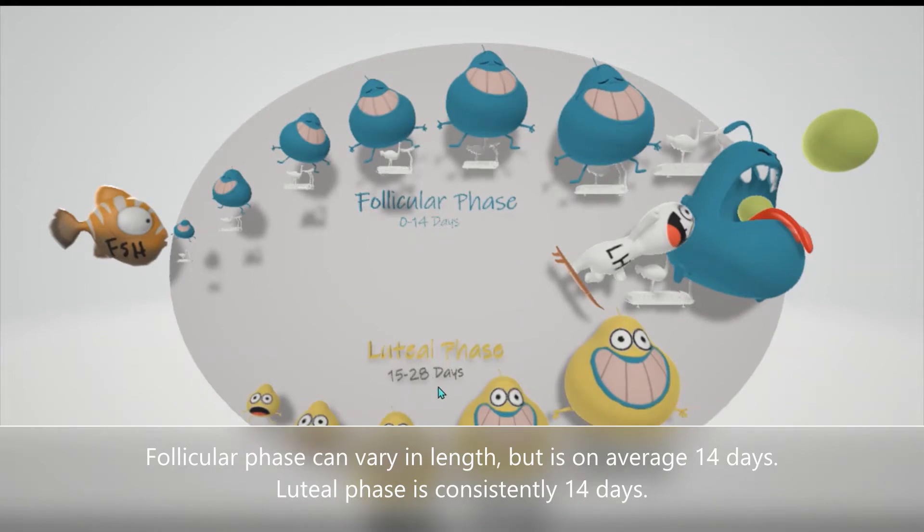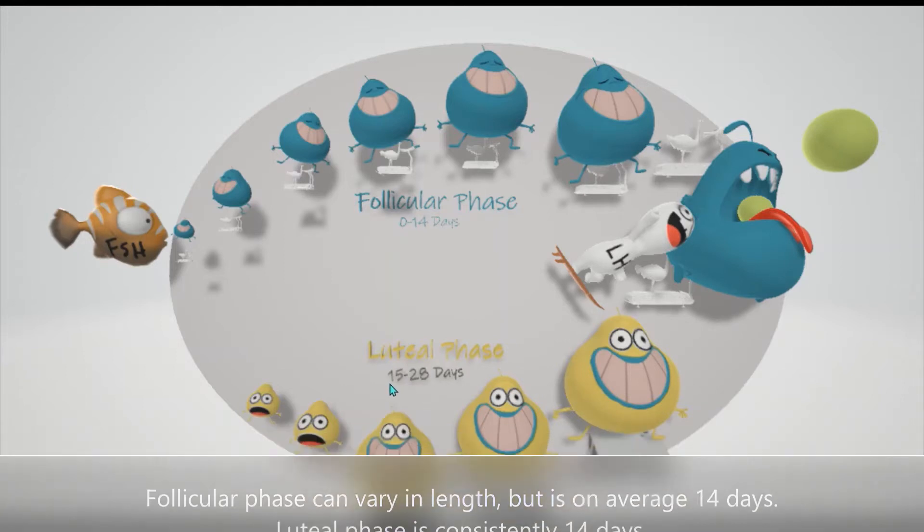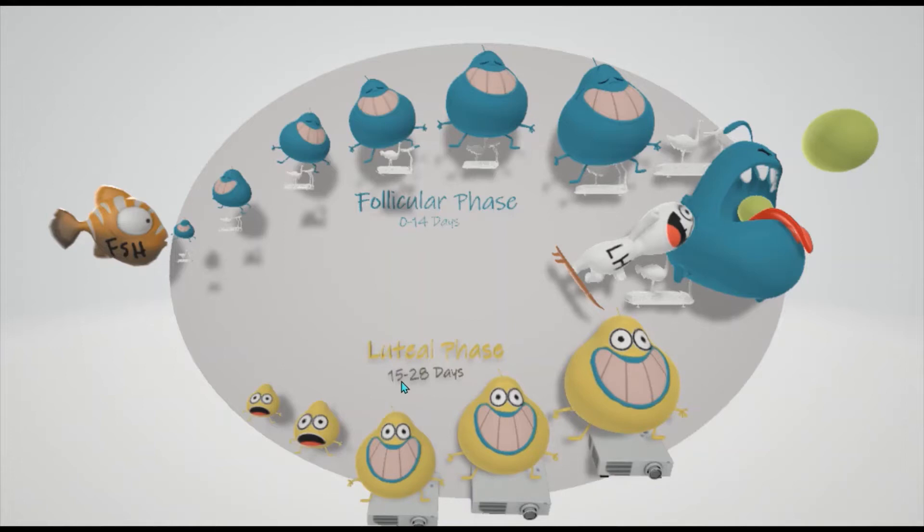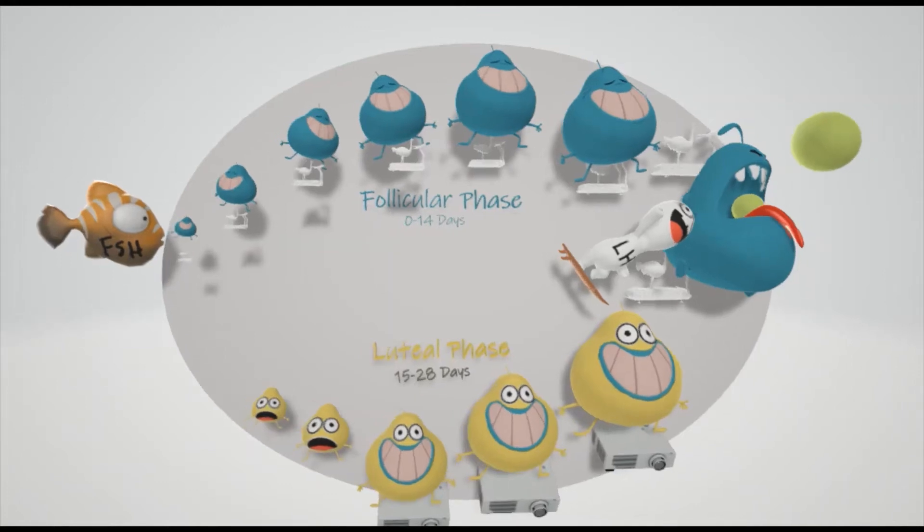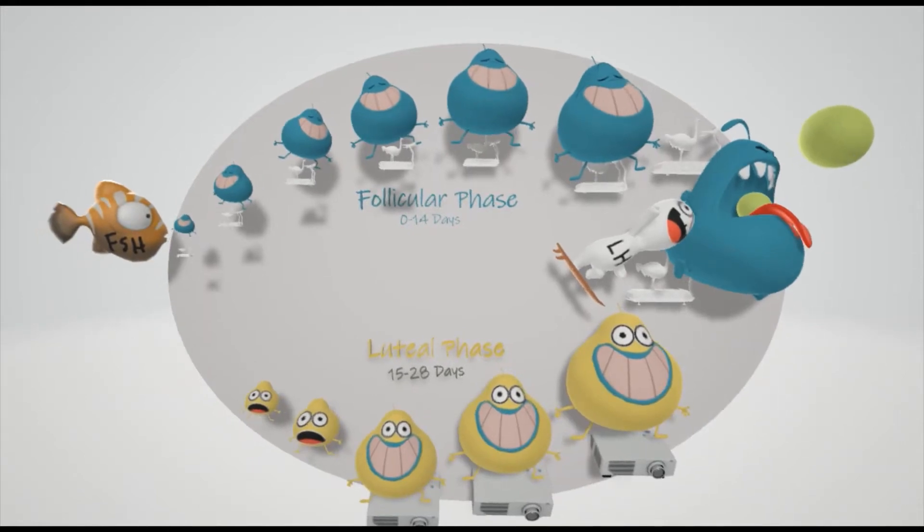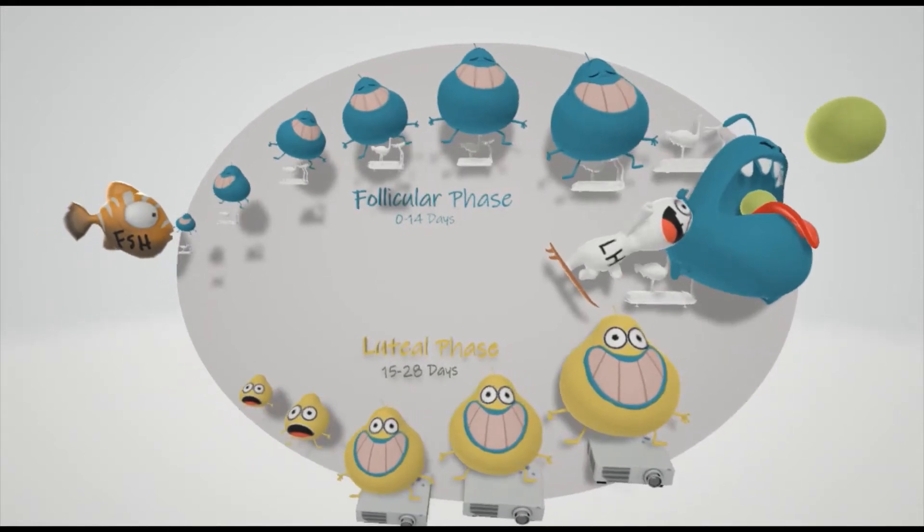The luteal phase is more set. On average, it's always 14 days, so since ovulation is on day 15, the luteal phase is day 15 to day 28. But if follicular phase is 0 to 15 days, then the luteal phase would be 16 to 29. Now let's describe what's going on in the follicular phase and the luteal phase, and explain why they're called the follicular and luteal phase.